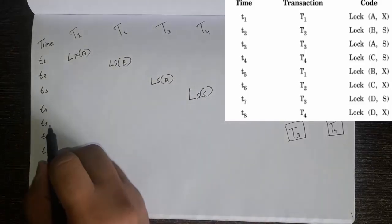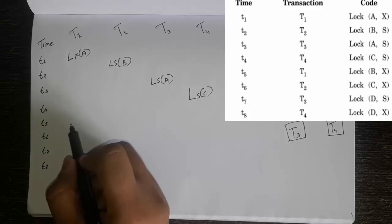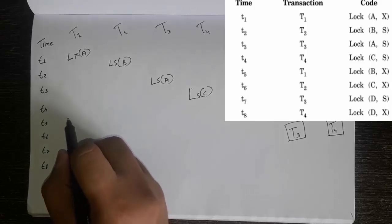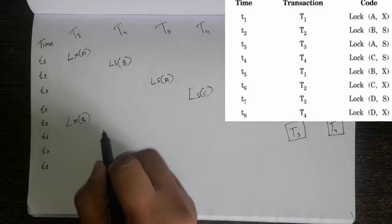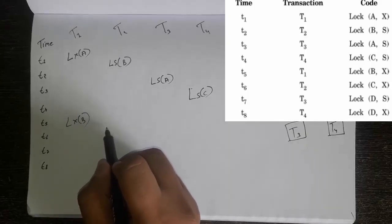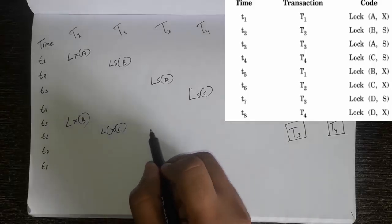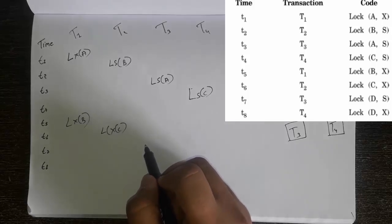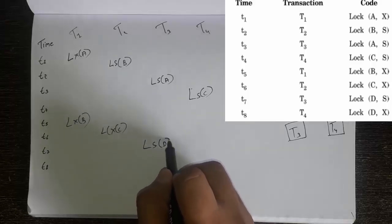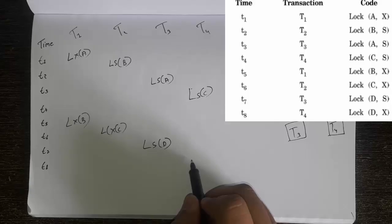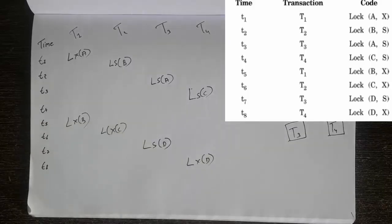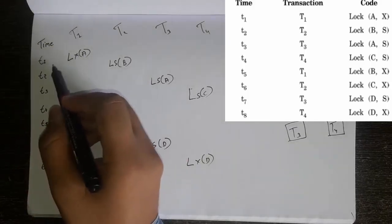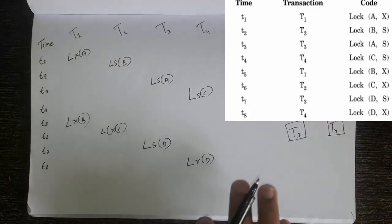Then at time T5 we are again at transaction T1, so write L-X(B). Then T6 is transaction T2, so write L-X(C). Then at time T7 it is transaction T3, so write L-S(B). And at time T8, which is transaction T4, write L-X(B). We have now written all the transactions. You can match your table to verify — T1 of transaction T1 is Lock-X of A, it is just a straightforward mapping.